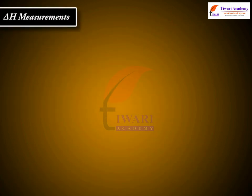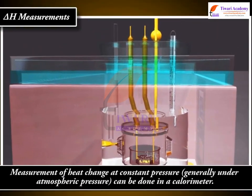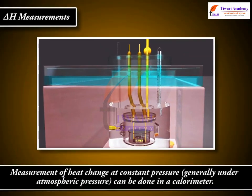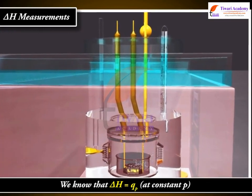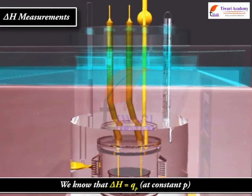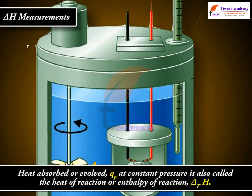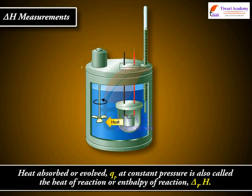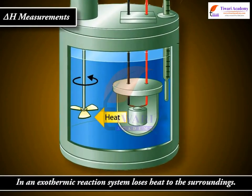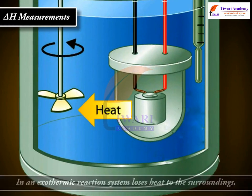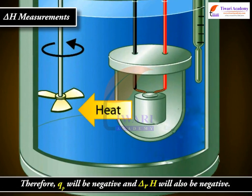For delta H measurements, measurement of heat change at constant pressure — generally under atmospheric pressure — can be done in a calorimeter as shown. We know that delta H equals Q_P at constant pressure, and therefore heat absorbed or evolved Q_P at constant pressure is also called the heat of reaction or enthalpy of reaction, delta_R H. In an exothermic reaction, the system loses heat to the surroundings; therefore Q_P will be negative and delta_R H will also be negative.